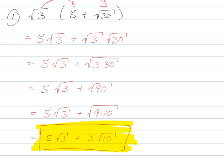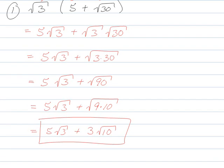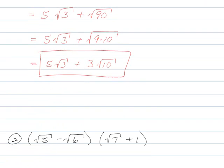Now this is actually where you finish. Sometimes people try to add these, but remember this is just like saying 5x plus 3y — you can't combine them. Don't do anything weird here because anything you try to do from here is just going to be wrong. When you have two different radicands, like root 3 and root 10, they're apples and oranges — completely different entities. So just be completely content with that being your final answer.